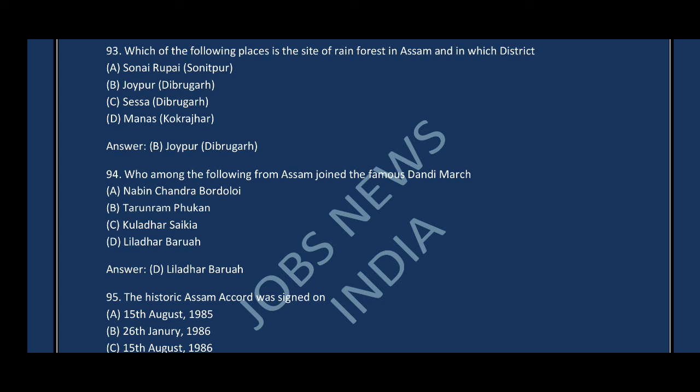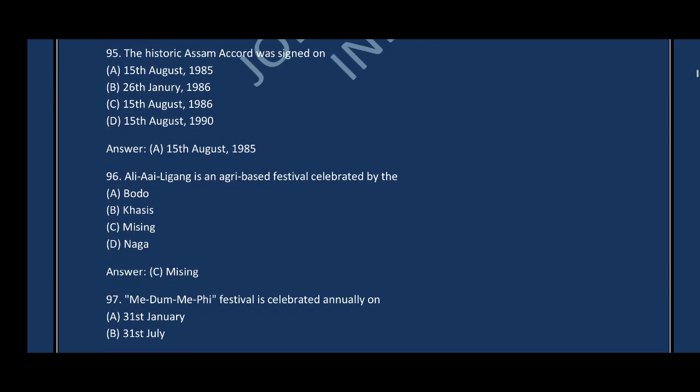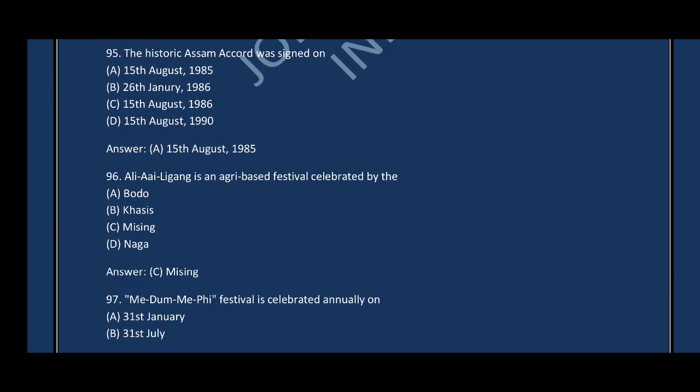Question number ninety-four: Who among the following from Assam joined the famous Dandi March? The correct answer is option D — Liladhar Barua. Question number ninety-five: The historic Assam Accord was signed on — the correct answer is option A, 15 August 1985.